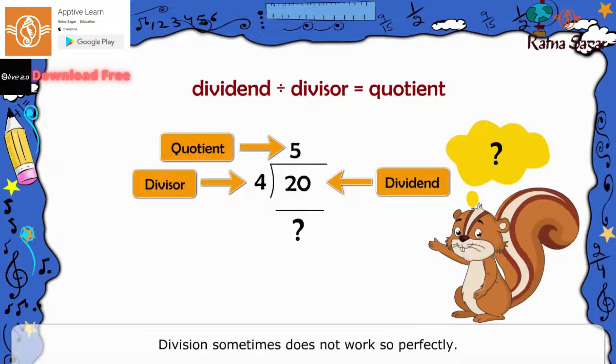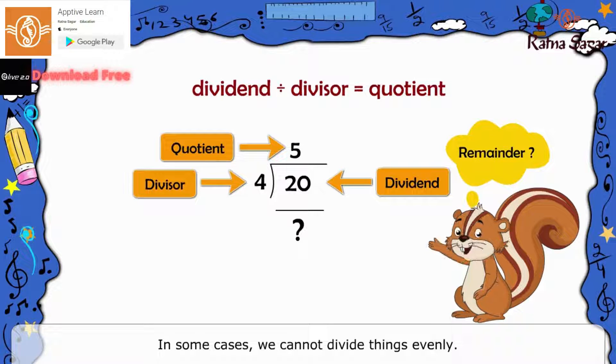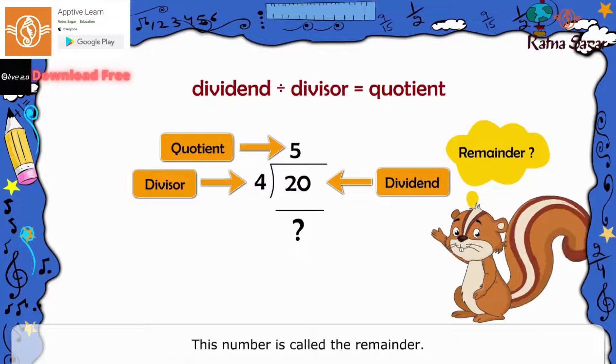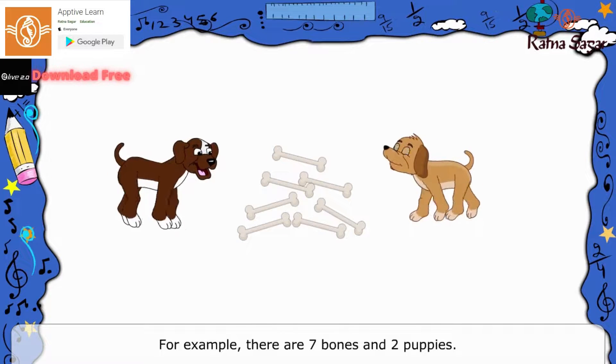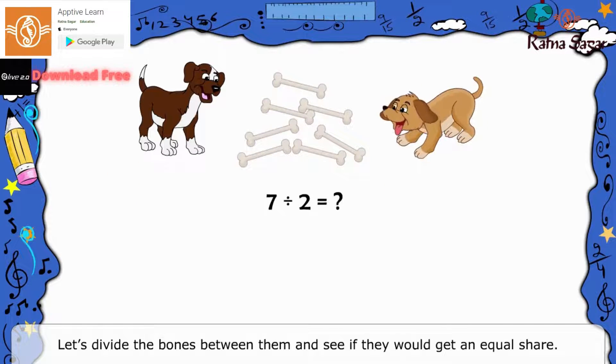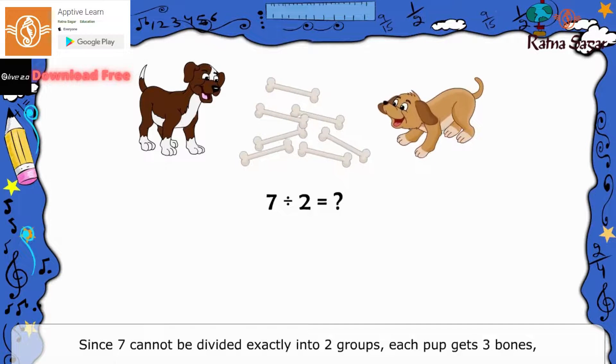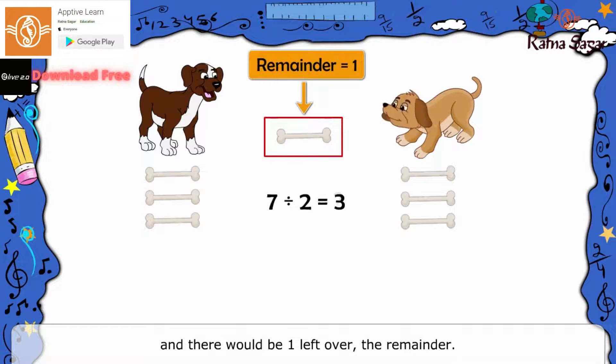Division sometimes does not work so perfectly. In some cases, we cannot divide things evenly. A number gets leftover. This number is called the remainder. For example, there are 7 bones and 2 puppies. Let's divide the bones between them and see if they would get an equal share. Since 7 cannot be divided exactly into 2 groups, each pup gets 3 bones and there would be one leftover, the remainder.